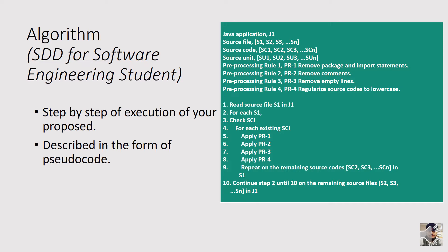For instance, if we are trying to process a Java file, we declare the Java application as J1 and the source file as S1 until SN. We have to declare all the elements — input, output, and the rules being used. The second part is the step-by-step execution where you write numbered steps. This is basically part of your program written in a half-natural, half-scientific way, which you can apply in your project.